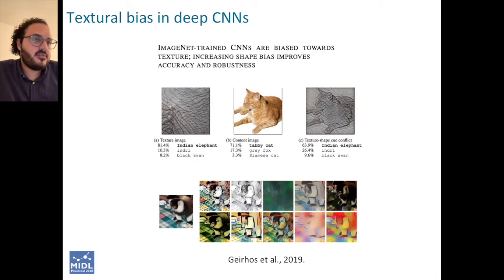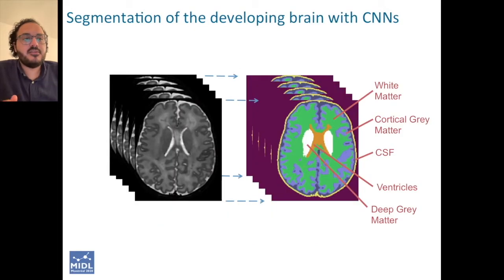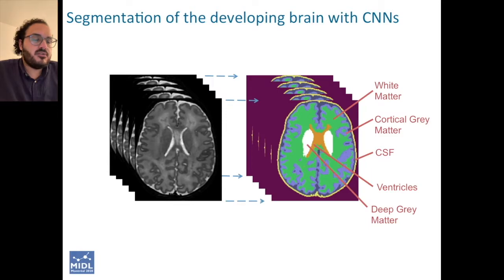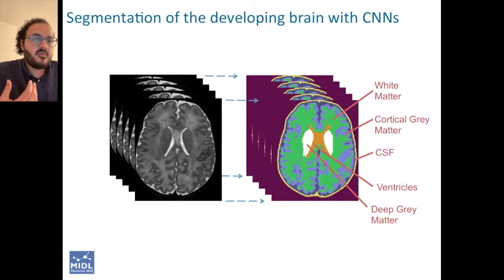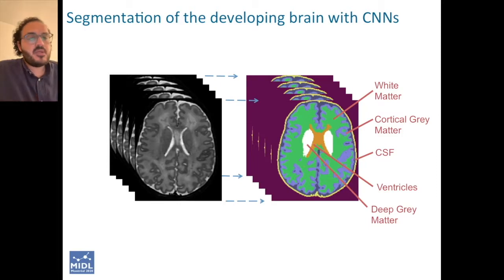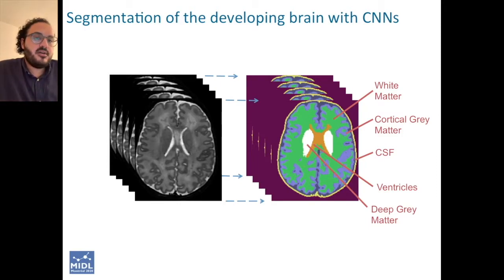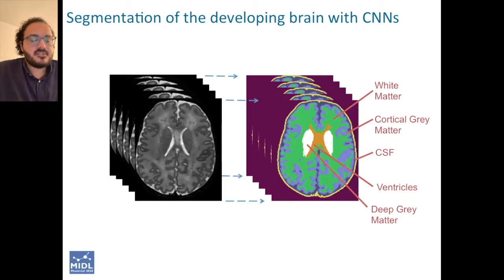We think this is directly relevant to medical imaging and particularly relevant to the kind of work that we do on developmental brain mapping. One task we tend to do quite often is trying to find a mapping using deep learning between an input image of a developing brain — a neonatal brain — and a semantic segmentation output with classes such as white matter, gray matter, CSF, etc.